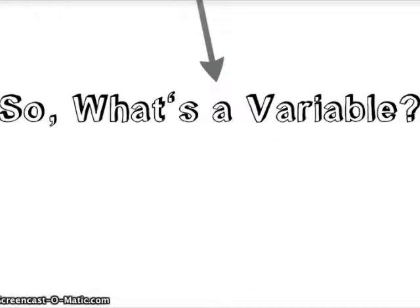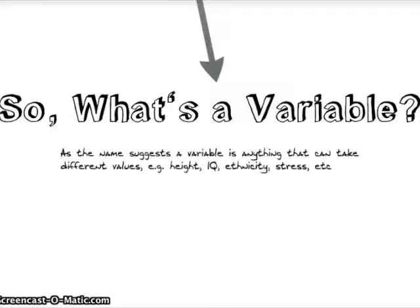So if we know what a hypothesis is and it uses these variables, what's a variable? As the name suggests, a variable is anything that can take different values — like height or IQ, ethnicity or stress.